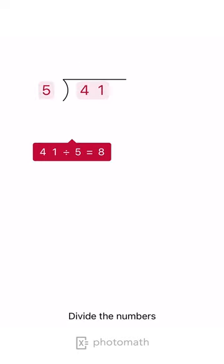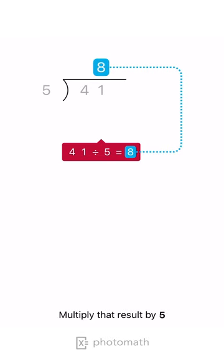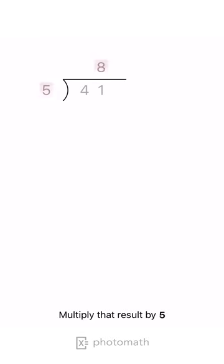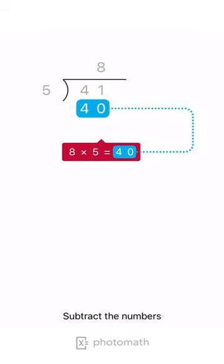Divide the numbers. Write the result, 8, in the answer line. Multiply that result by 5. Write the product under the number we initially divided. Subtract the numbers.